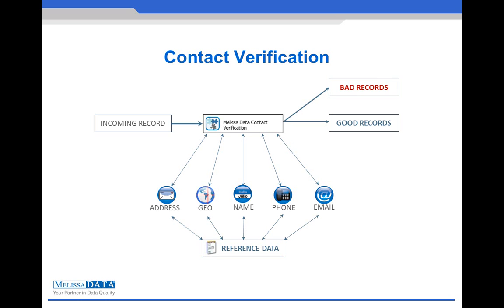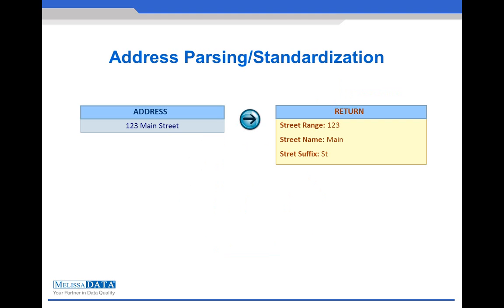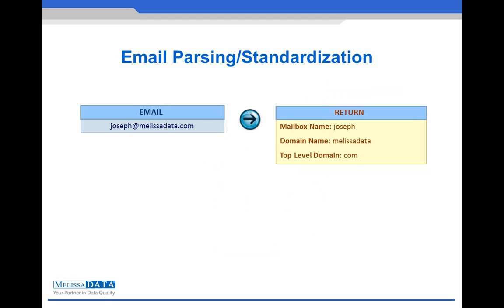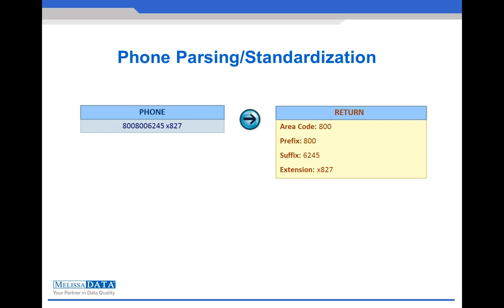The components will also intelligently parse out addresses into their components, such as street name, street number, and suffix. Names can be split into first, last, middle, suffix, and prefix. Email addresses can be broken down into mailbox name, domain name, and top-level domain name. And phone numbers into area code, prefix, and suffix — and even the extension if available.